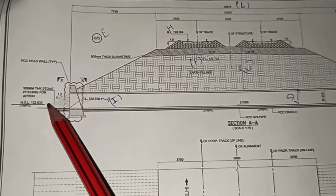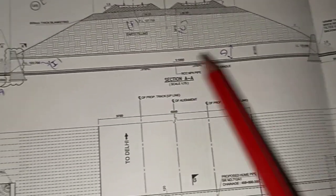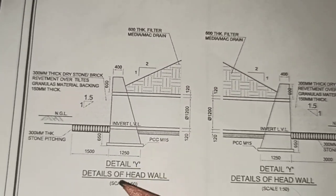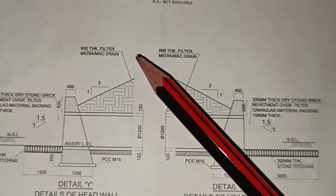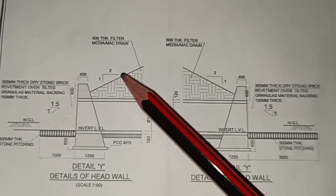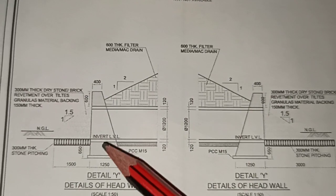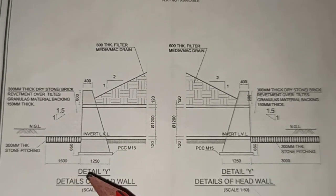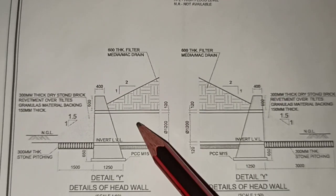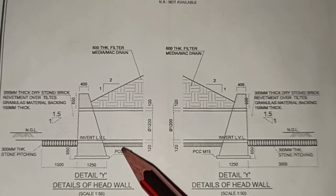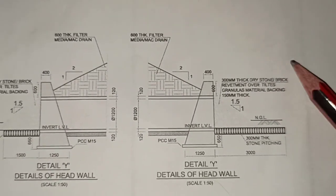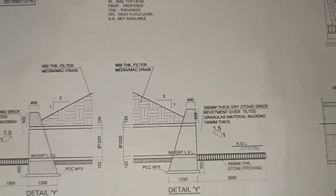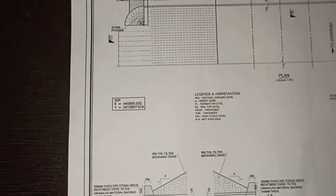In the general arrangement drawing, details of the head wall and toe wall are shown. The formation slope is 1 vertical to 2 horizontal. The boulder pitching on the upstream side is 1500 mm in length. The detail of the toe wall on the downstream side shows stone pitching of 3000 mm in length.